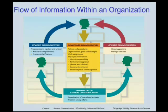Managers exercise control and coordination by the direction that information flows. The flow of information within an organization can be downward, upward, or horizontal. Downward communication flows from supervisor to employee, from policy makers to operating personnel — in other words, from top to bottom on the organization chart. Information may include policies and procedures, organizational goals and strategies, and work assignments. Downward communication also defines employee development through job roles, performance appraisals, constructive criticism, and recognition.